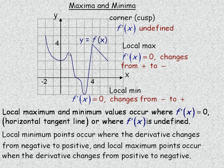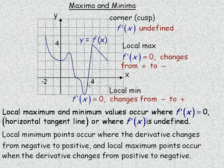This is called a local maxima point because if you go to the immediate left or the immediate right, the graph is lower than it — it's the highest point on a small interval around that point. Then there's another local minima here, another local maxima here, and that's a special kind we'll talk about as well.